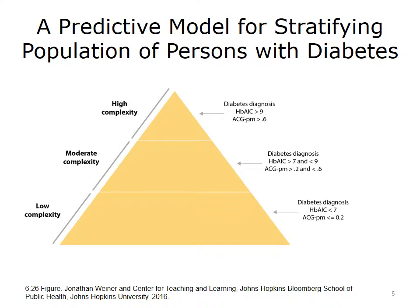JHHC uses the patient's hemoglobin A1C, derived from the EHR or lab data system. The clinicians among you understand that that's a very important marker for blood sugar level over a period of time. Based on this segmentation, the Johns Hopkins Population Management Nursing Team is able to select those persons in greatest need of outreach or other interventions.